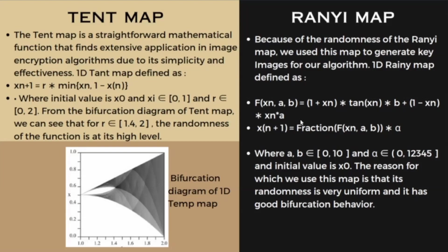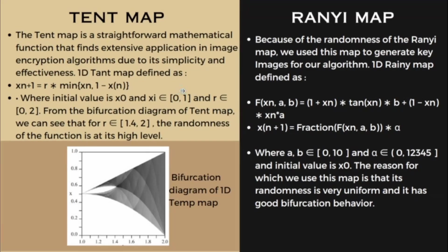The other chaotic function is the 1D Rainy map. This is the Rainy map function. The initial values are x0, a, b, and alpha. a and b are in the range of 0 to 10, and alpha is in the range of 0 to 12,345. In chaotic functions, the next values produced are based on initial values and are unpredictable, which is why we are using chaotic functions in this technique.